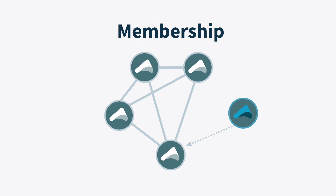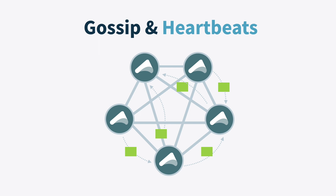All other features of Akka Cluster are built on top of membership. Under the covers, Akka Cluster is implemented using heartbeats and gossip. Each node heartbeats to a subset of the other nodes, then information is inferred from that and gossiped about. The gossip information includes which nodes have seen which other nodes and which nodes have seen the current state of gossip. As a user of Akka Cluster, you don't need to worry about this. The interface you get is that you can ask for the current state of the cluster, or alternatively subscribe to updates so you can be told when nodes join and leave the cluster.